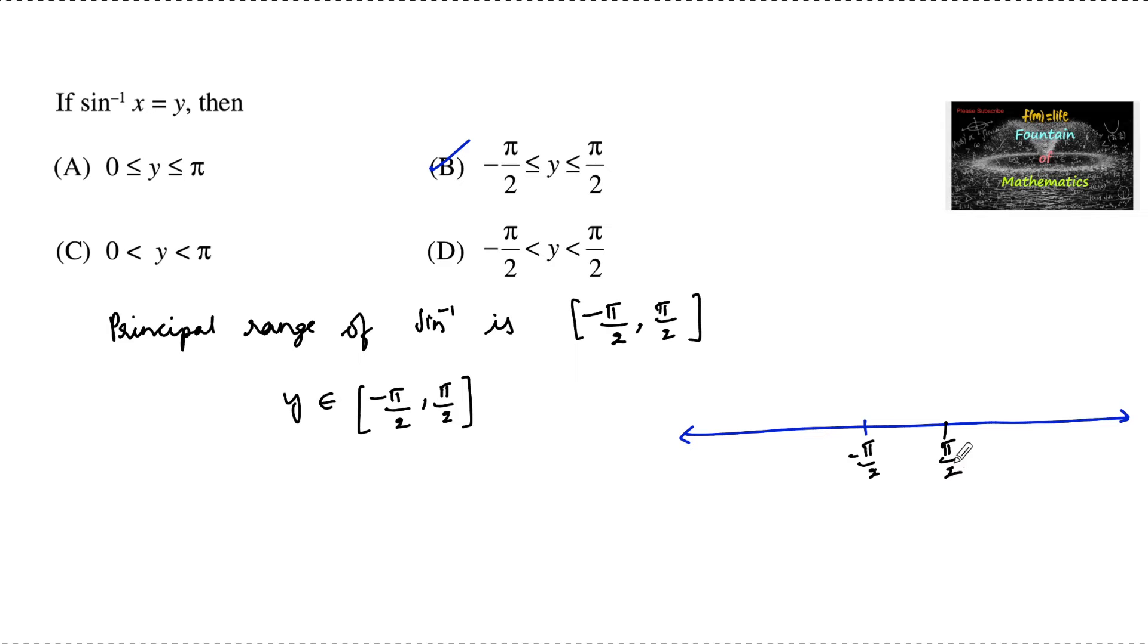Minus pi by 2 to plus pi by 2, or you can consider pi by 2 to 3 pi by 2, or we can consider minus 3 pi by 2 to pi by 2 and so on. We can also include these intervals and so on.